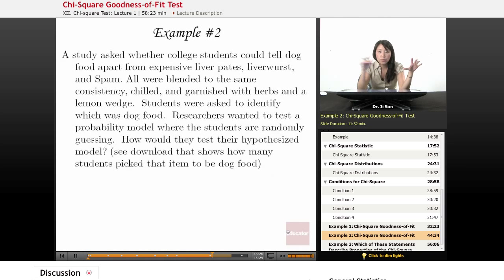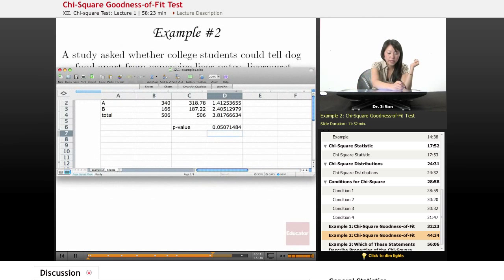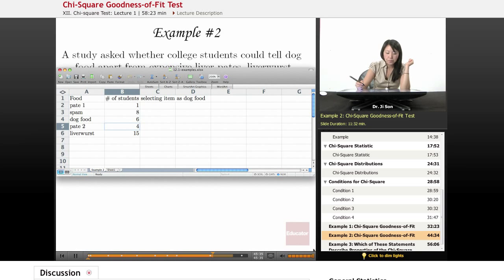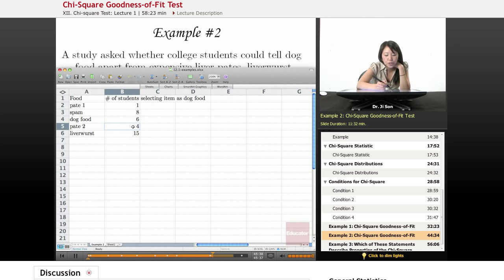and then they need to identify which was dog food. It's sort of like a multiple choice question. If you hit Example 2 in the download that's listed below,